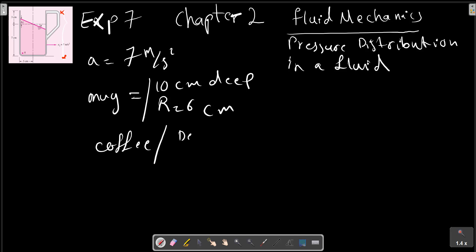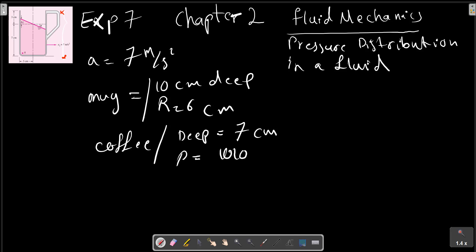The mug is 6 cm in diameter and contains 7 cm depth of coffee, so the empty depth equals 2 cm. Assuming rigid body acceleration of the coffee, with the density of coffee equal to 2 kg per cubic meter.